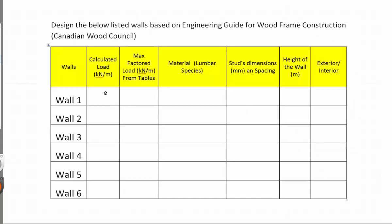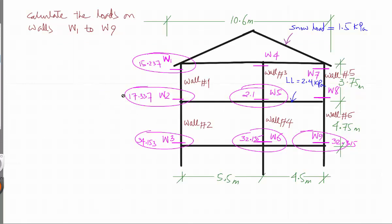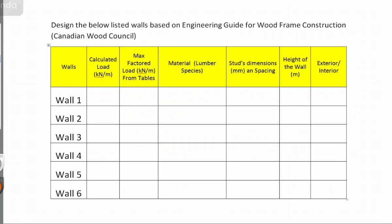We have a template. This column will be for the load — the first load we had was 17.337 kilonewtons per meter length. Going back: the first load for wall 1 is 17.337, and the second load for wall 2 is 34.153.